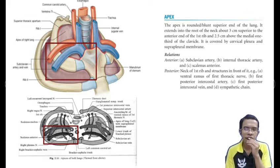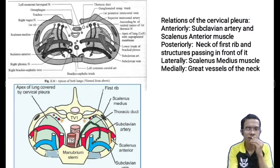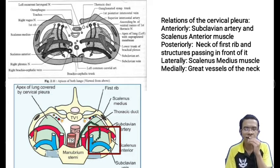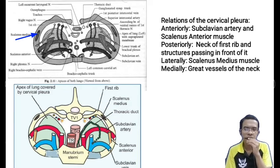The relations of the apex of the lung: anteriorly — the subclavian artery, internal thoracic artery, and scalenus anterior muscle; posteriorly — the neck of the first rib and structures in front of it, namely the ventral ramus of the first thoracic nerve, first posterior intercostal artery, first posterior intercostal vein, and the sympathetic chain. The relations of the cervical pleura are similar to those of the apex of the lung. Anteriorly lies the subclavian artery and scalenus anterior muscle. Posteriorly is the neck of the first rib with the sympathetic trunk, first posterior intercostal vein, superior intercostal artery, and T1 spinal nerve. Laterally lies the scalenus medius muscle and medially the great vessels of the neck.